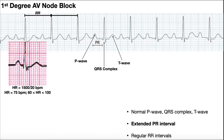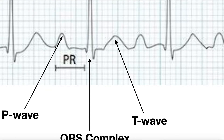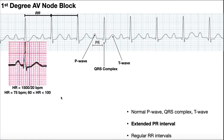This normal PR interval could apply to normal sinus rhythm, sinus bradycardia, or tachycardia depending on context. But look at this PR interval: you start from the beginning of the P wave to the beginning of the QRS. It's bigger than five boxes — here's five right here, and it's almost to seven, about six and two thirds. The general rule is if the PR interval is more than five boxes, it's automatically an AV node block.